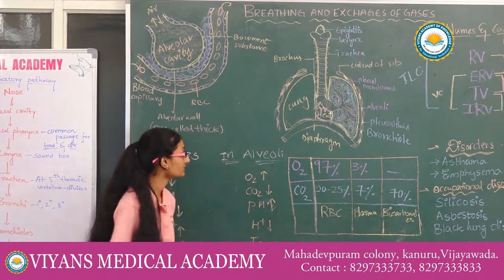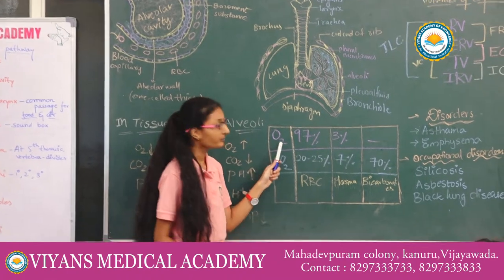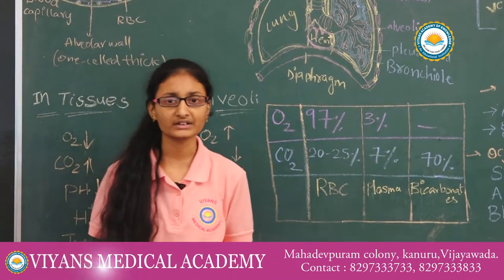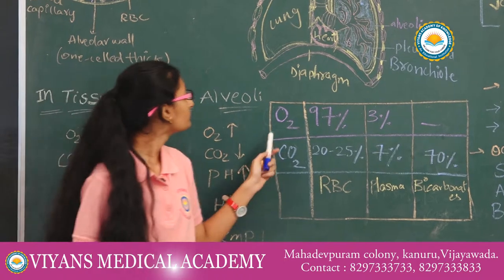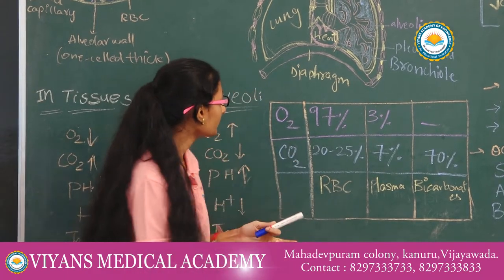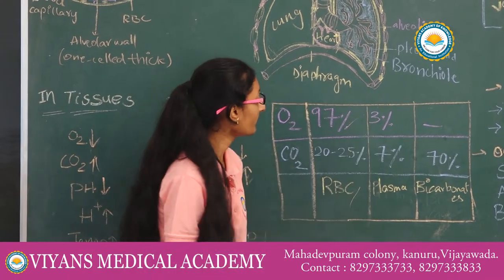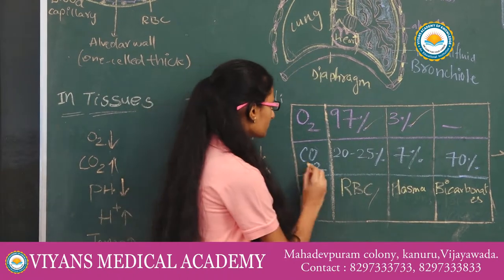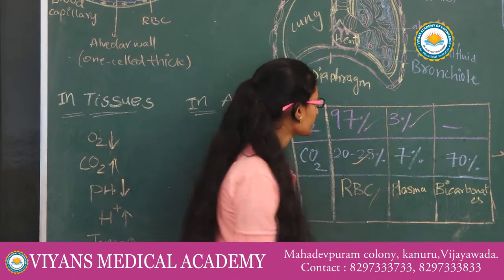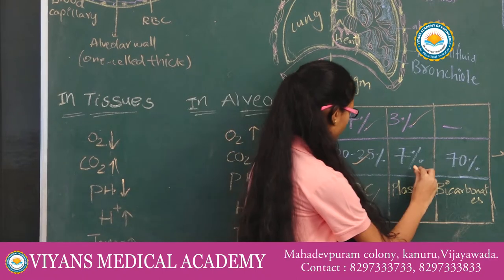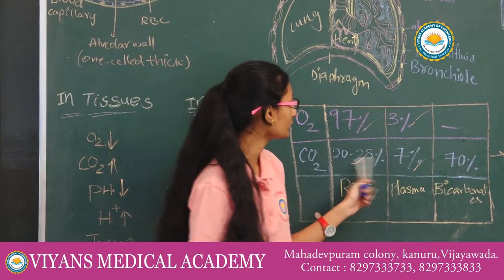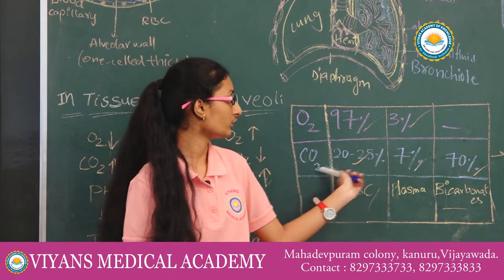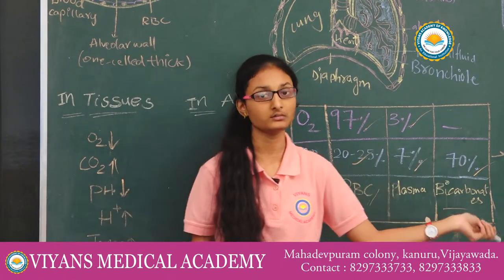Blood plays a major role in the transport of gases. For oxygen: 97% is carried through RBCs and 3% through plasma. For carbon dioxide: 20 to 25% is carried by RBCs, 7% is carried through plasma, and 70% is transported in the blood as bicarbonate.